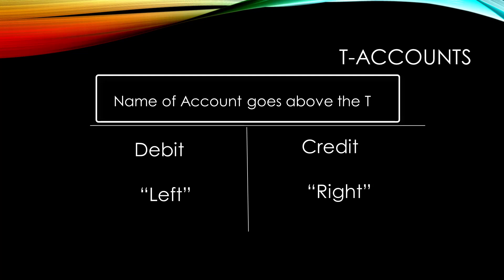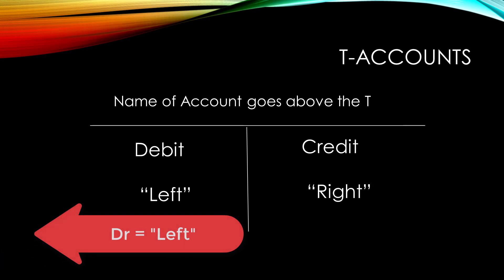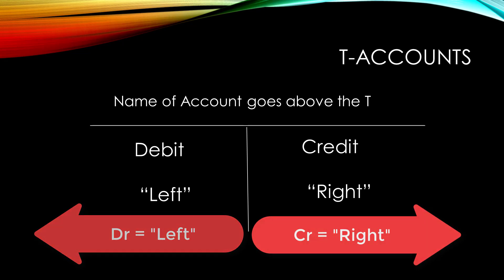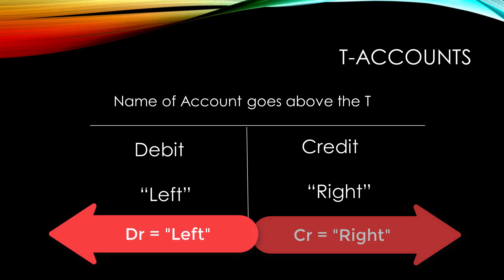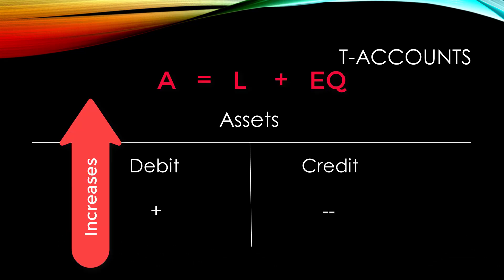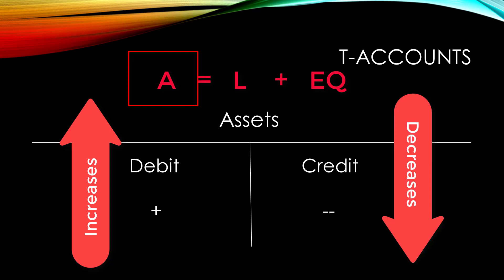We will be learning several rules for T-accounts. The word debit means left and the word credit means right. Since there are five types of accounts we will be learning five rules of debit and credit that will lead us to success in learning how transactions are recorded in real life. The first type of account in the fundamental accounting equation is assets. All assets are increased with a debit and decreased with a credit.